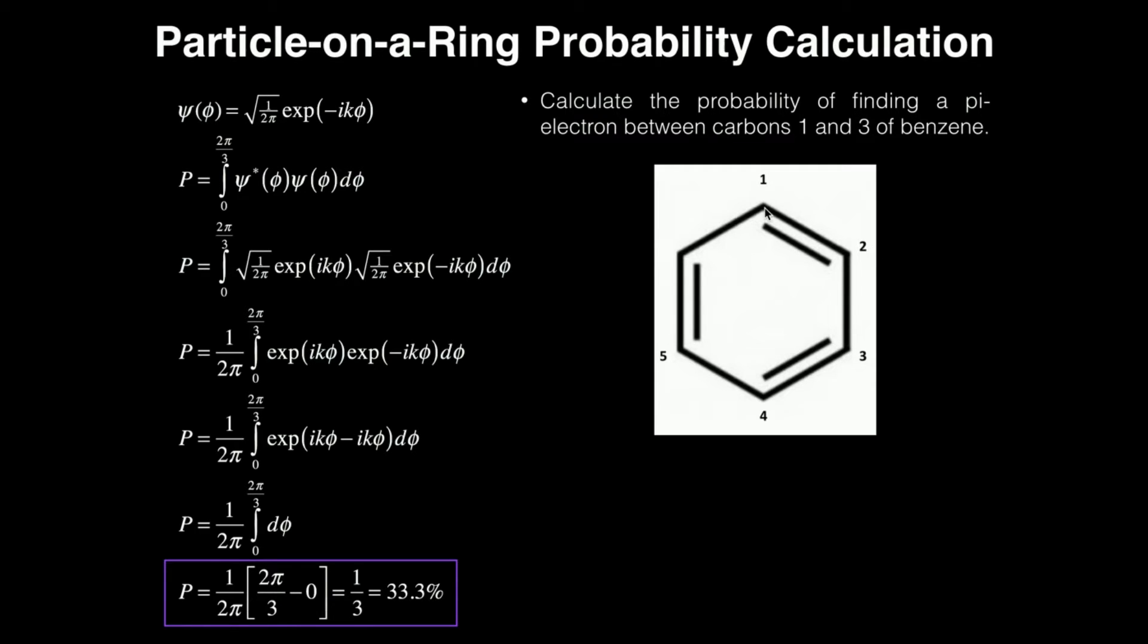So if I arbitrarily set my carbon one as zero radians, then two would be one pi over three, and three, this would be two pi over three. So when I do this integral to calculate the probability, it's going to be between zero and two pi over three. That's how you determine what the limits of integration are for something like benzene.